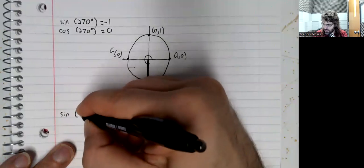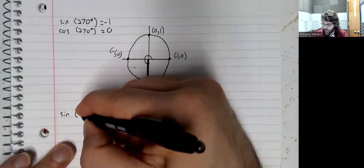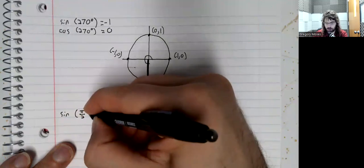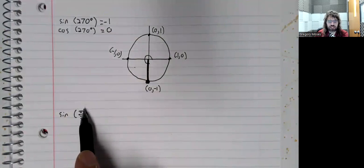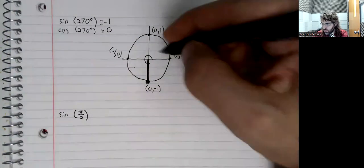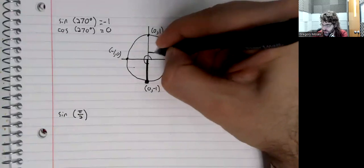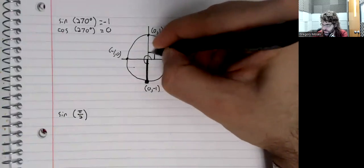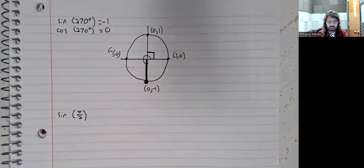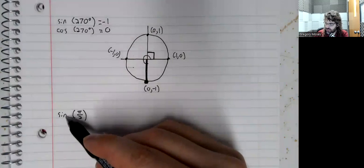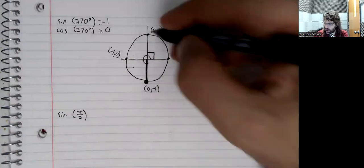The sine of pi over two. So if we don't have a degree symbol, we're working with radians. Pi over two radians is a right angle. The sine is the y-coordinate.